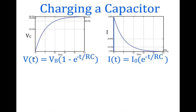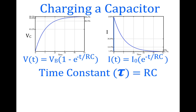The equation we use to calculate the voltage across the capacitor with respect to time is: V(t) = V_battery × (1 − e^(−t/RC)), where V_battery is the battery voltage, e is the mathematical constant approximately 2.718, t is time, R is resistance, and C is capacitance. Similarly, the current with respect to time is: I(t) = I_max × e^(−t/RC). The RC term is our time constant — tau = R × C.